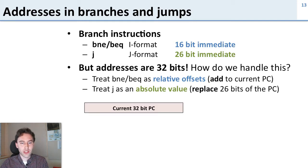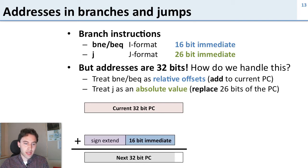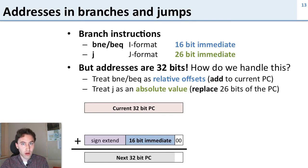Let's take a look at an example. Here's a branch instruction and we have a current 32-bit program counter — the address of our current instruction — and we want to generate our next 32-bit program counter. We take our 16-bit immediate, sign-extend it (which allows negative jumps, so we can jump forwards and backwards), and we also shift it two places to the left, multiplying it by four. We do this because the program counter is a byte address but instructions are words, so shifting by two makes the offset count in instructions, not bytes. The last two bits are always zero since the program counter must be word-aligned.